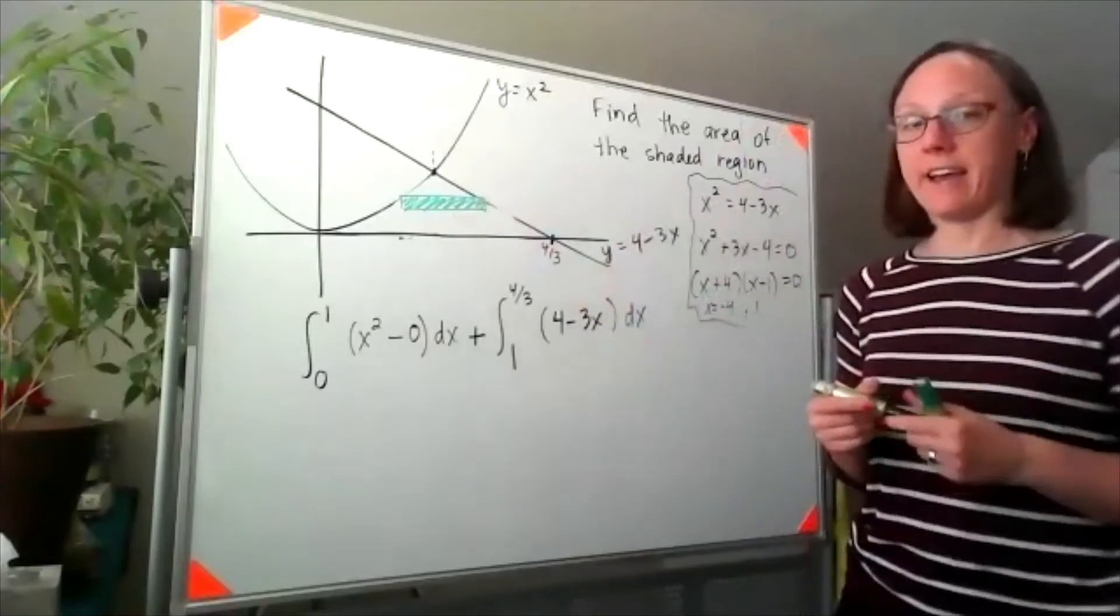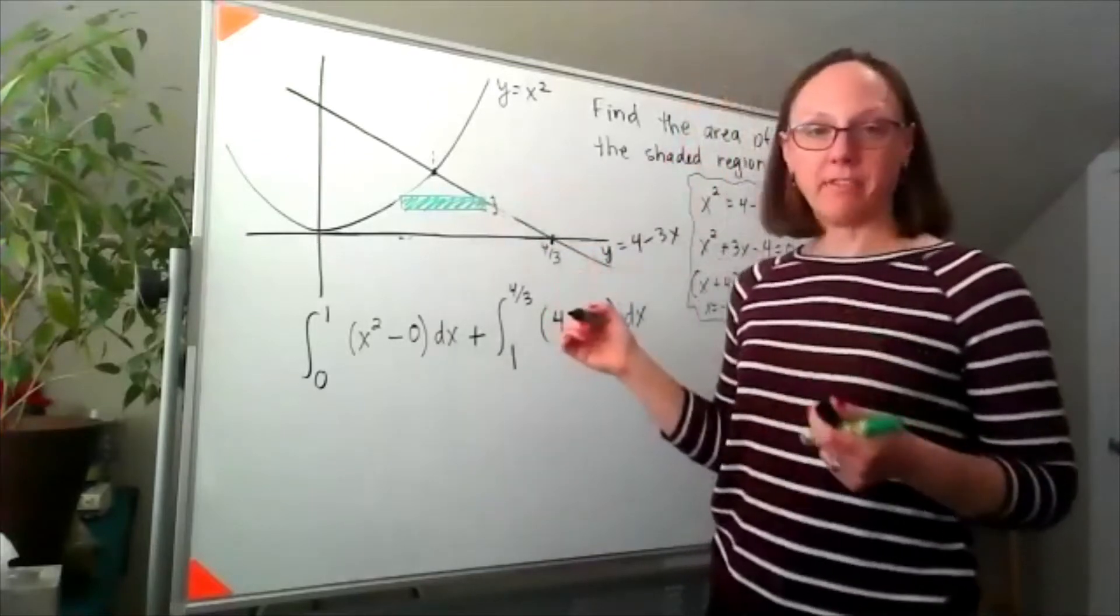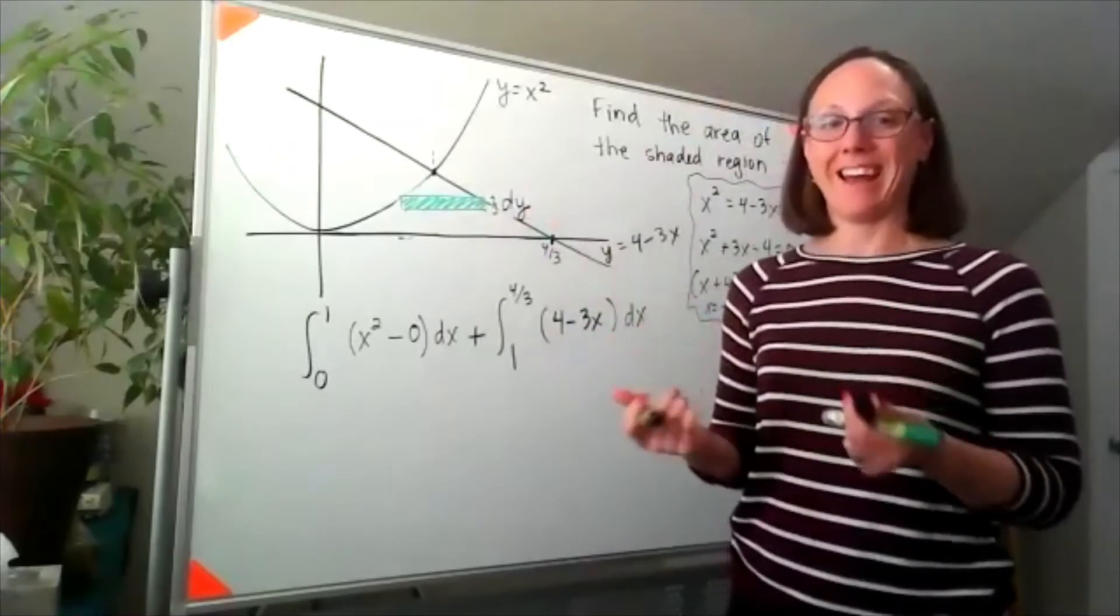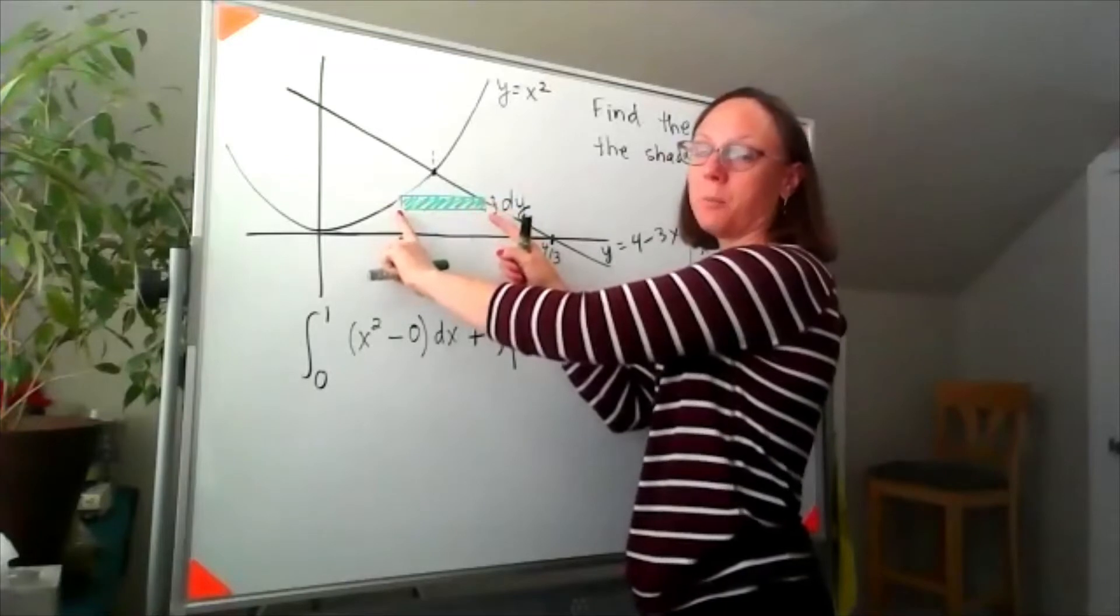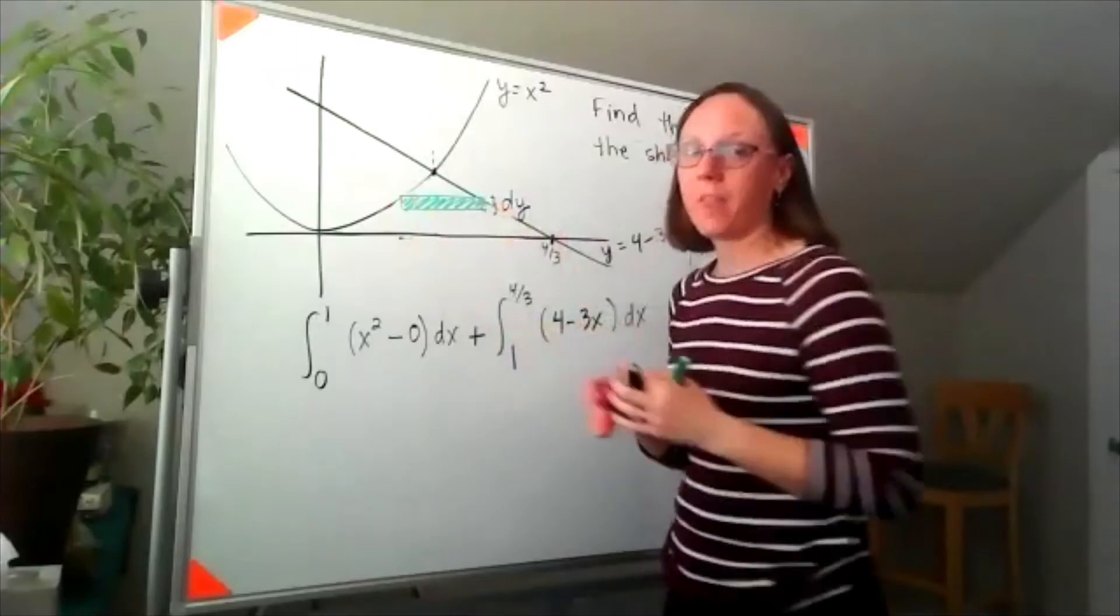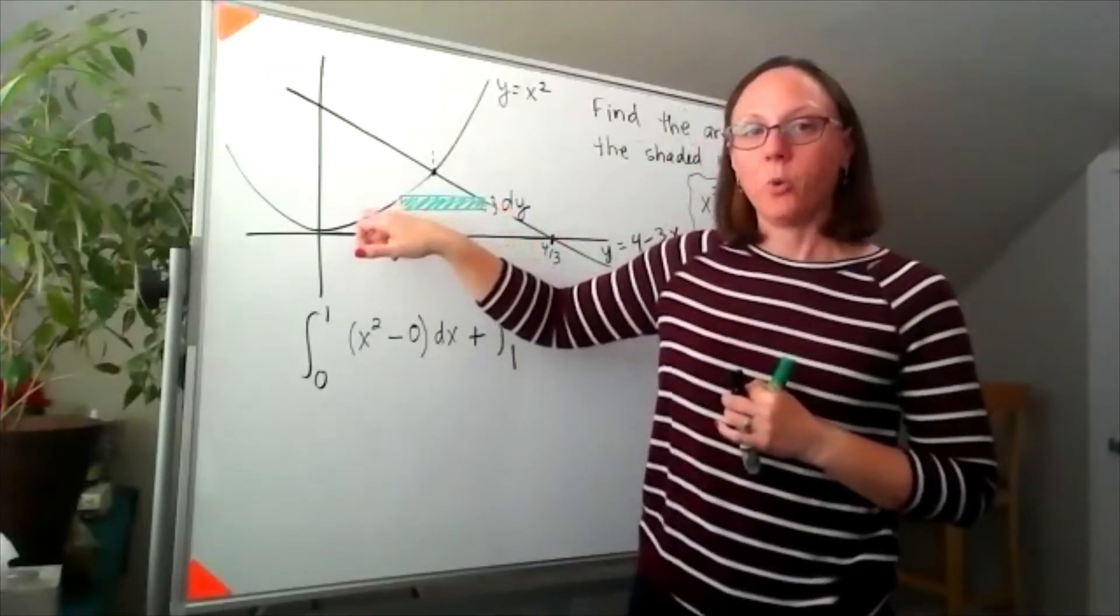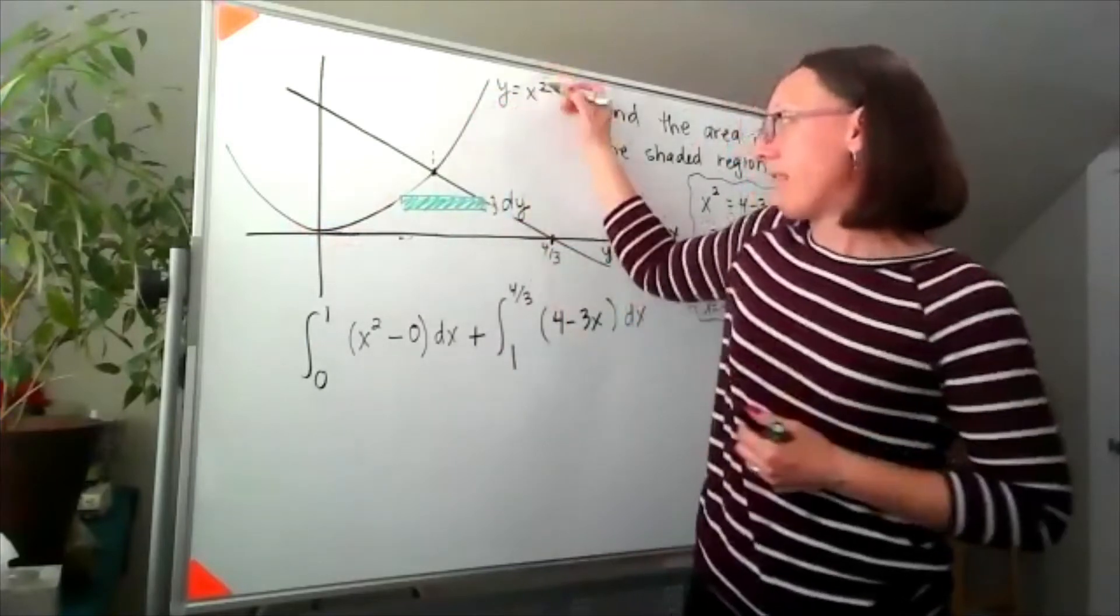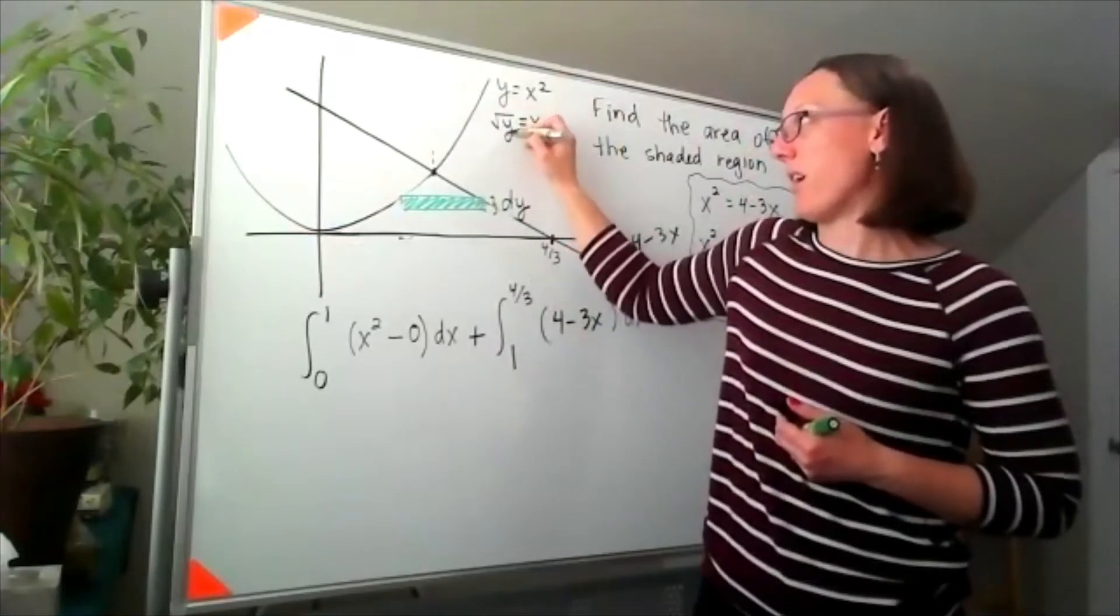If I'm doing this as a horizontal cross section, now the height of that cross section is a little bit of dy instead of a little bit of dx. And finding the width of this means finding the two x values at either extreme. If I want to know the x value over here, well that's coming from the curve y equals x squared. But if I rearrange that, that says x is equal to the square root of y.